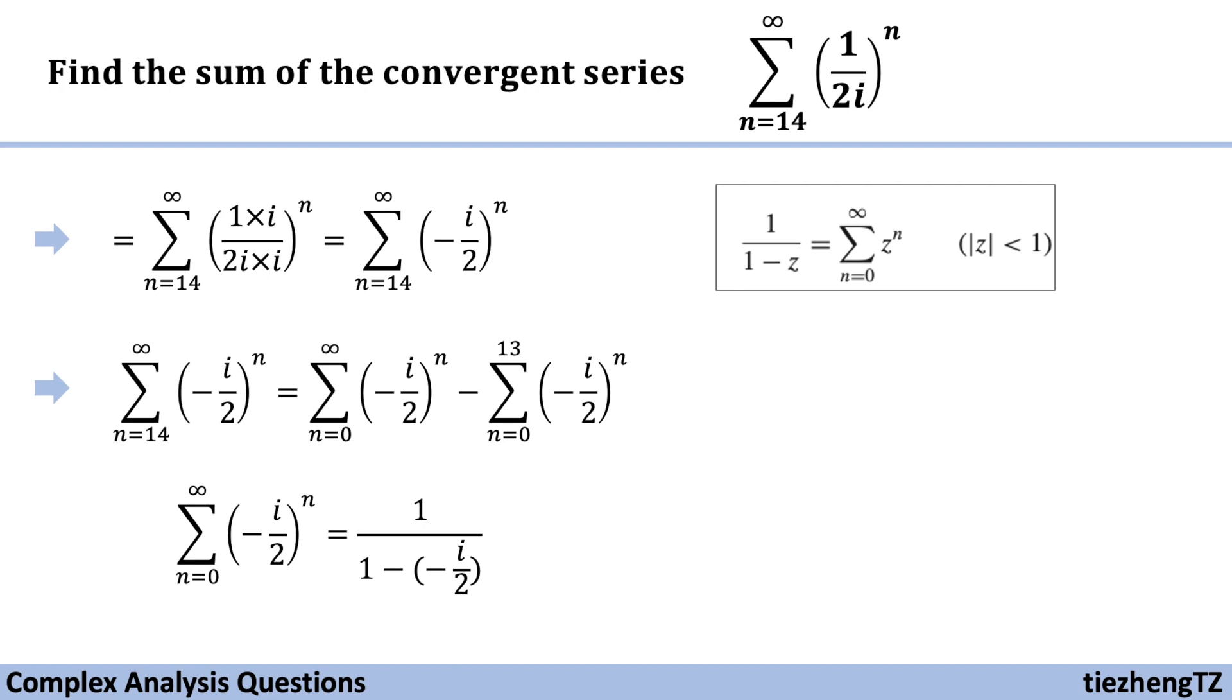For the second part, this is the geometric series with the ratio of minus half i, and we know the first term is 1 when n is 0, so we can just use this given equation.